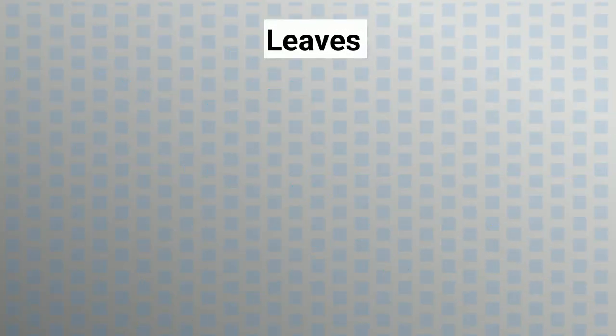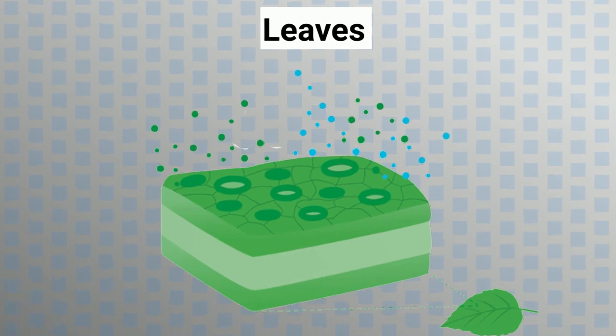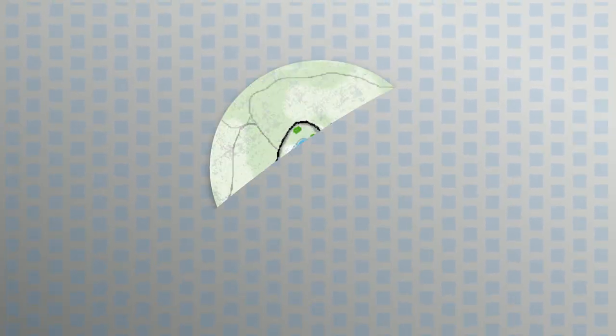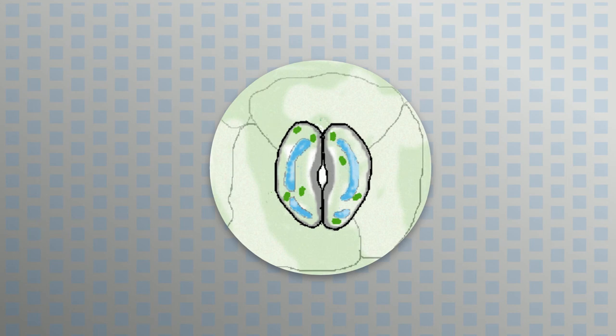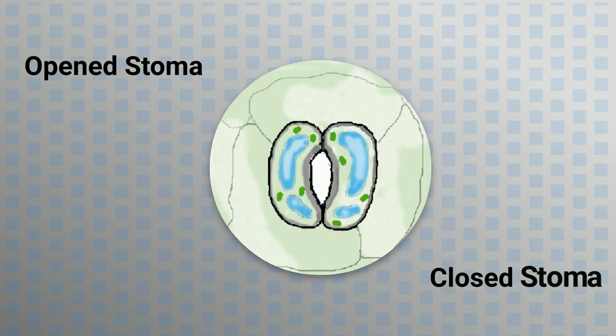Leaves: The surface of the leaves is also covered with pores, stomata, which exchange gases by opening and closing the pores.